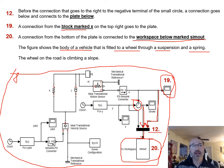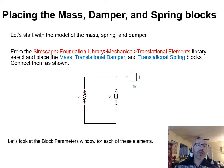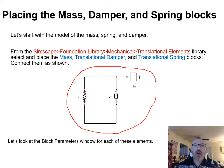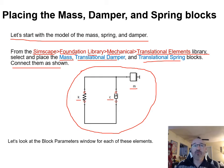This figure shows the vehicle body fitted to a wheel through a suspension and spring with the wheel on a slope. To build the mass, damper, and spring elements in Simscape, go to Simscape > Foundation Library > Mechanical > Translational Elements, and select the mass, translational damper, and translational spring blocks. Click and drag them into the arrangement shown.